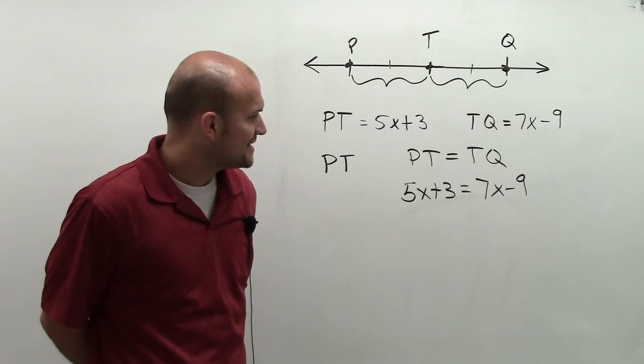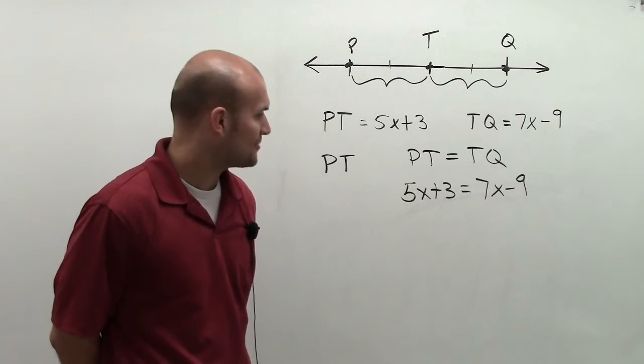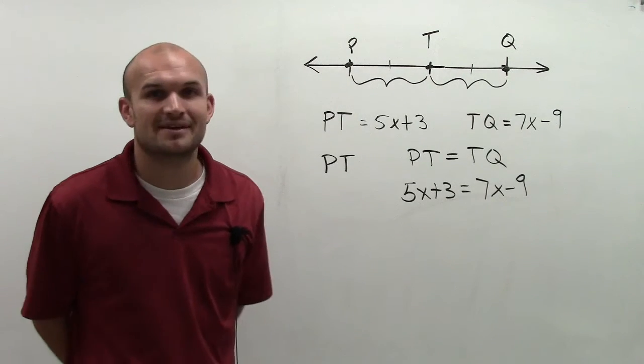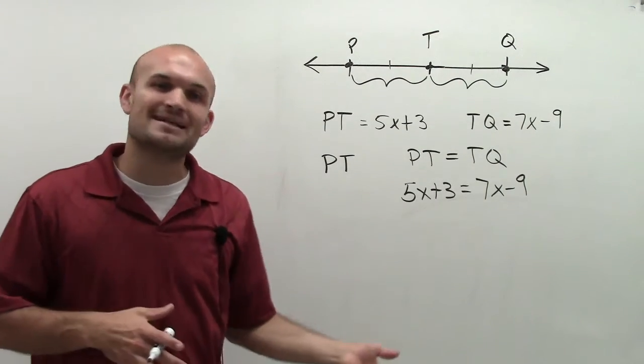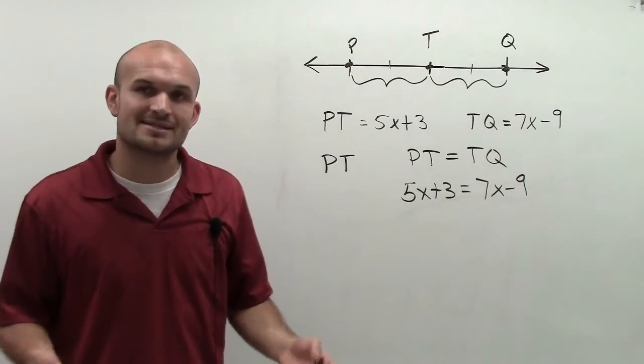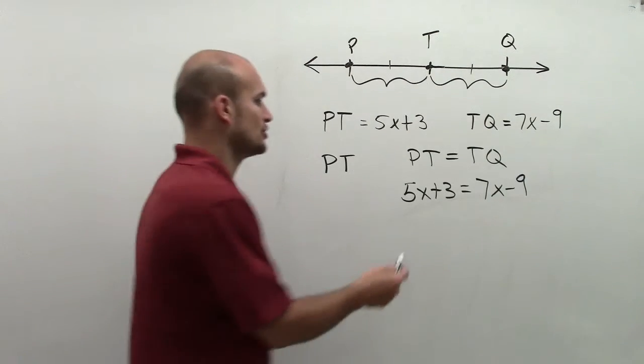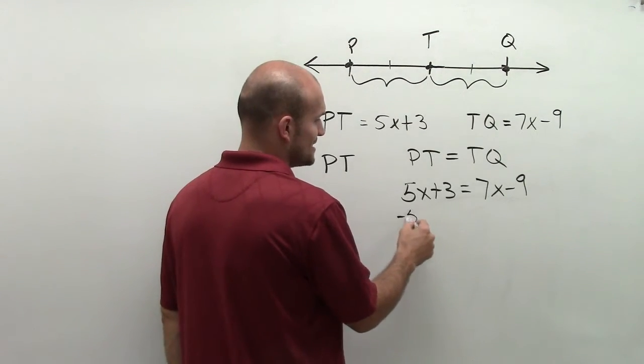So by doing this, I get this lovely problem: 5x plus 3 equals 7x minus 9. So what we have to do is remember, going back to algebra 1, how to solve a multi-step equation. Remember, solving a multi-step equation, you're going to want to get your variable on the same side.